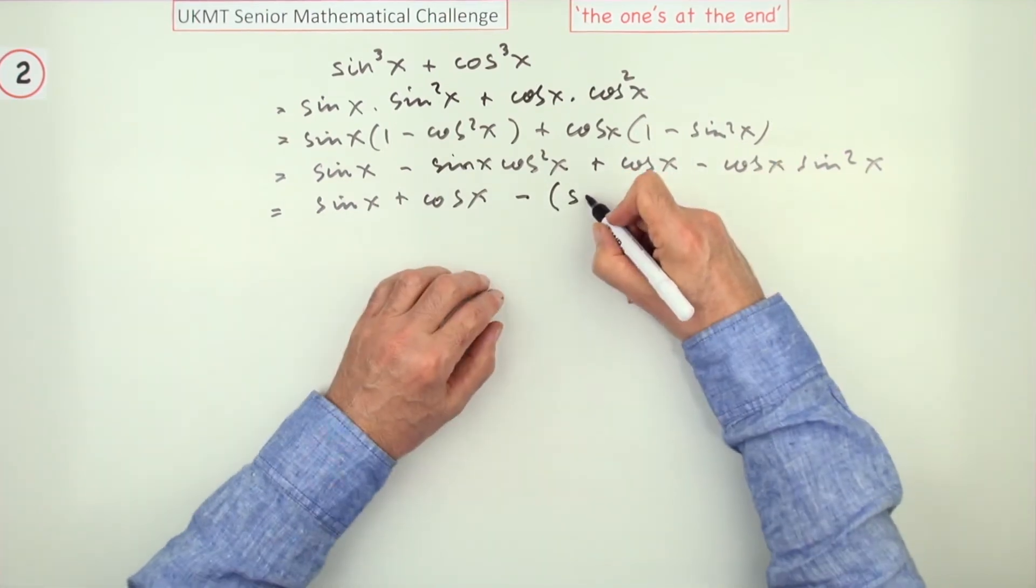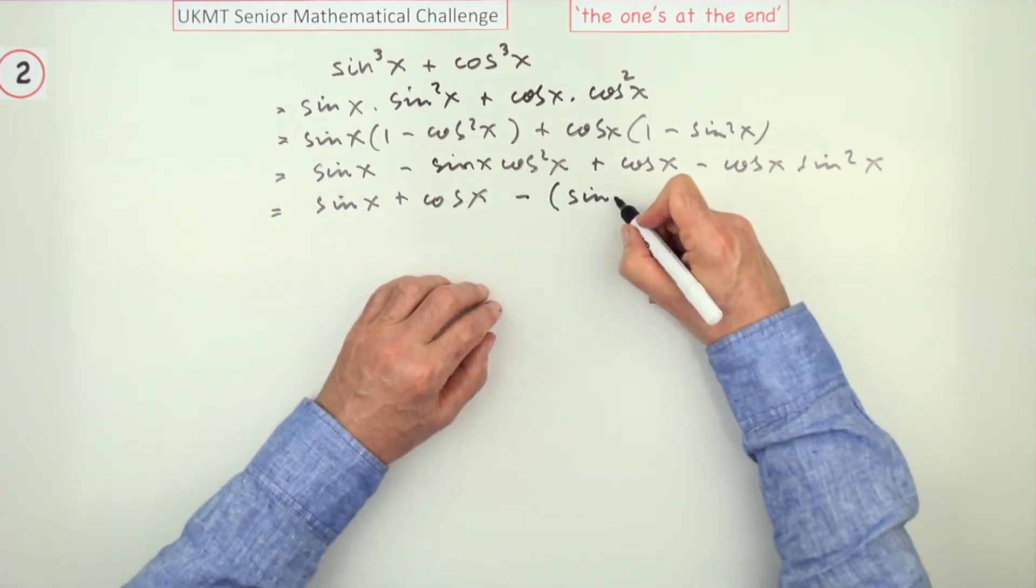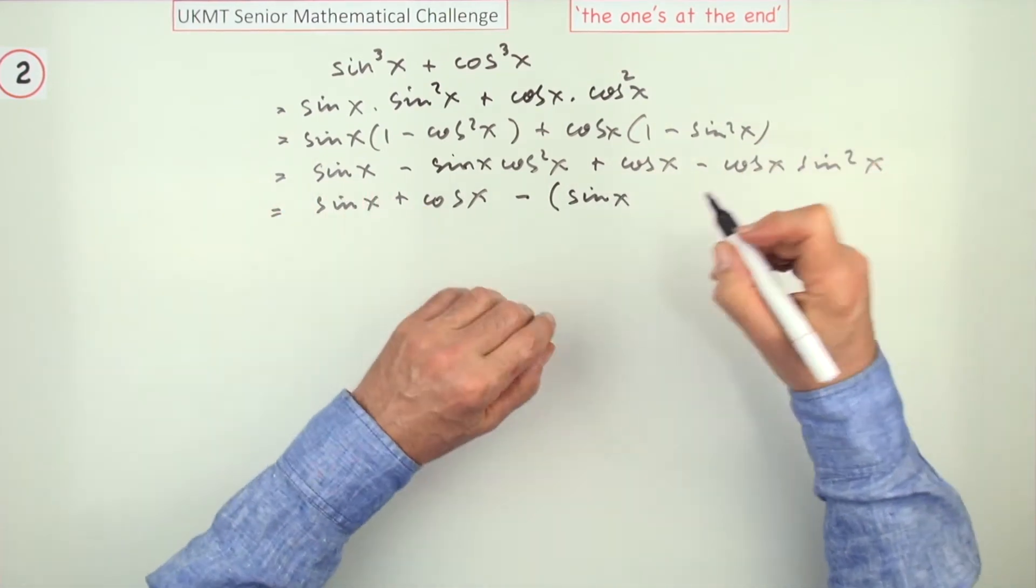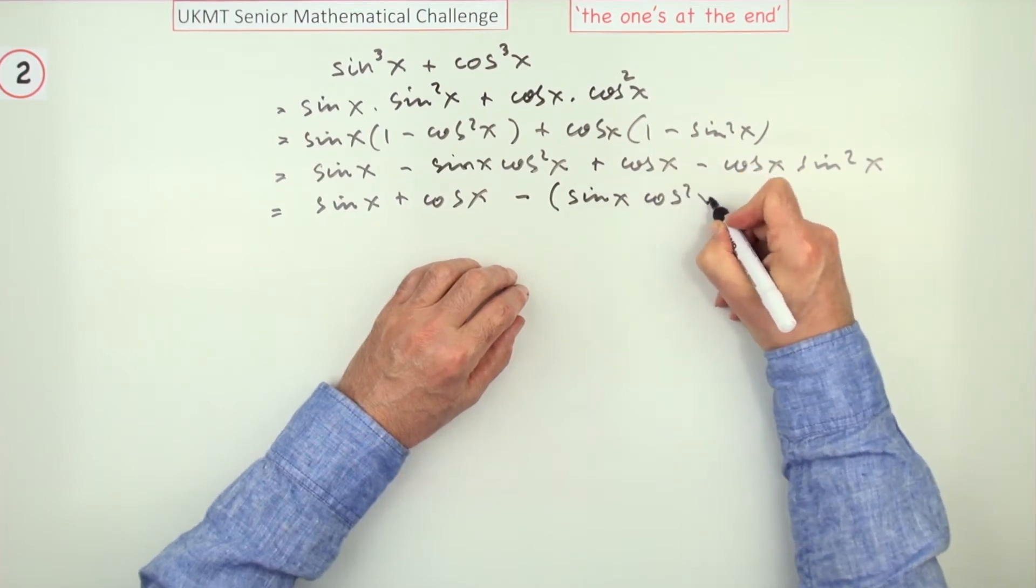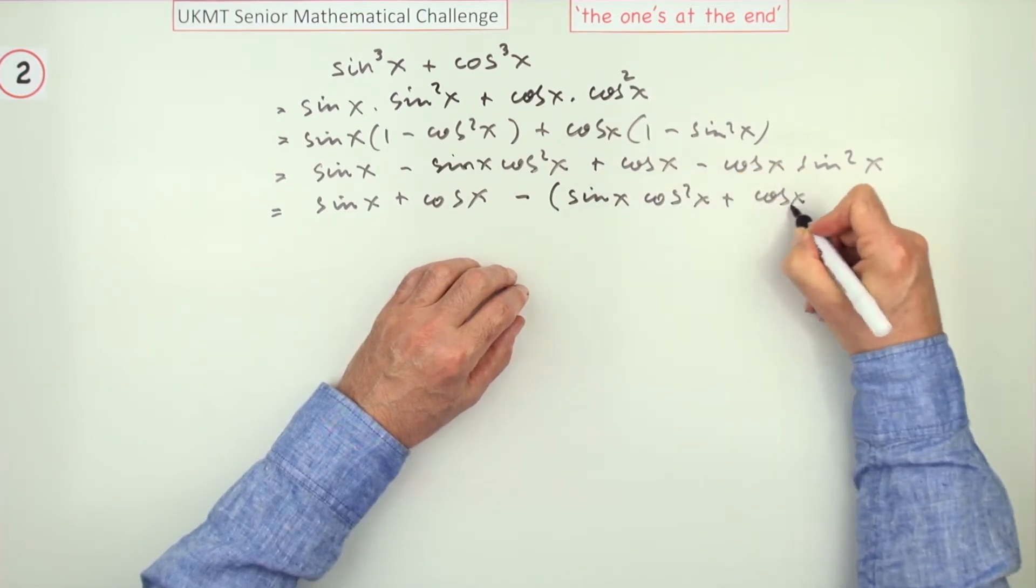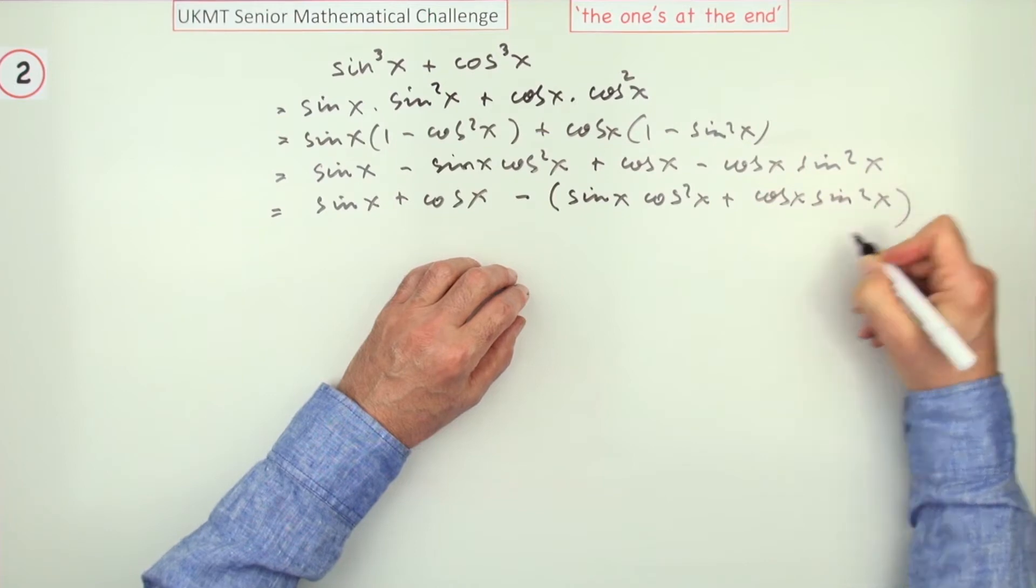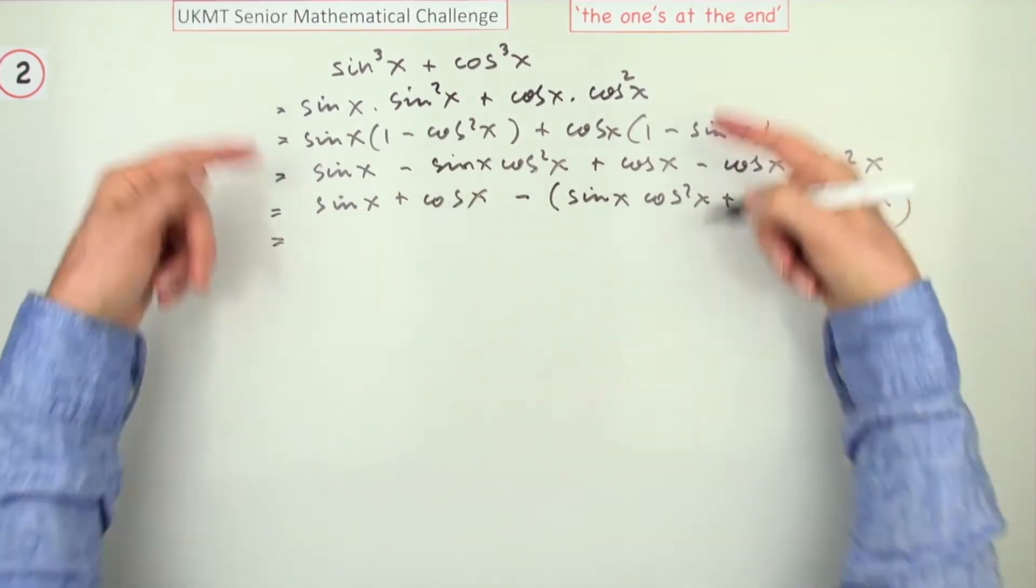And this is like a wasted line because all I've done is written the same thing out again, which is probably what you wouldn't do if you were just doing a multiple choice. Cos squared x plus cos x times sine squared x.